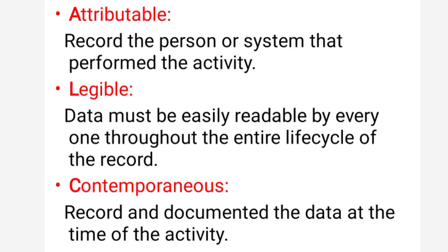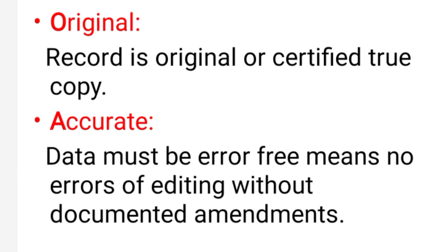Attributable means record the person or system that performed the activity. Legible means data must be easily readable by everyone throughout the entire life cycle of the record. Contemporaneous means record and document the data at the time of activity. Original means the record is original or a certified true copy. Accurate means data must be error-free — no errors of editing without documented amendments.